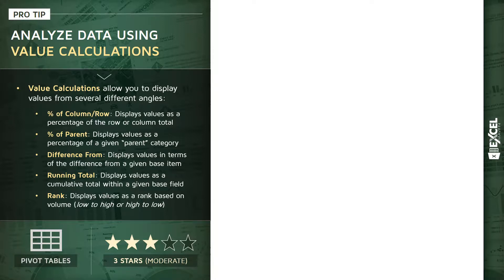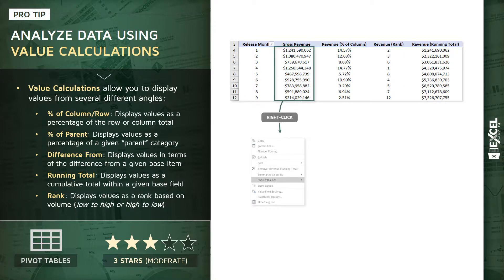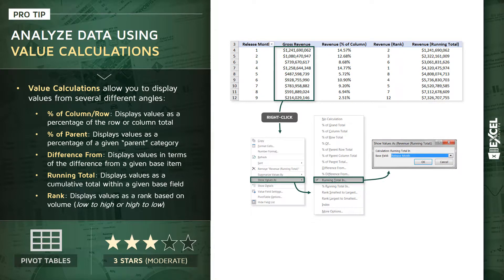Basically, what this allows us to do is show something like gross revenue totals by month — in this case month 1 through 9. But instead of just stopping there, we can right-click those revenue totals or create a duplicate copy and show those values in different ways. Here are some of the options we talked about: percent of grand total, percent of row, percent of parent, difference from, running total, and so on. You can select an option like running total and select a base field of release month.